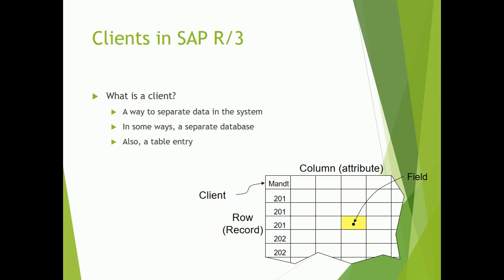A client in SAP R3 is a way to separate data in the system — essentially a separate database or table entry. You can have different clients on one SAP ERP system, such as client 201 and client 202, each being a different entity. When you perform any transaction, the backend stores that entry linked to your unique client number. When you log in, you use your user ID, password, and client number. One system can have as many clients as needed.